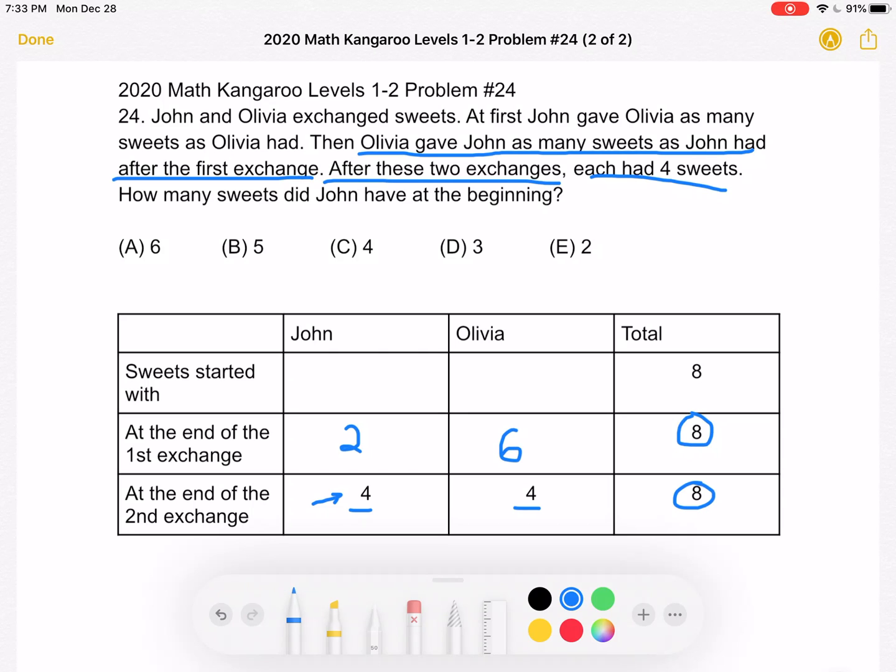Now let's work backwards again and try to figure out what happens during the first exchange. John gave Olivia as many sweets as Olivia had. So this time, John will give Olivia a certain amount of candies, that amount being equal to the amount she started with. So again, this time, Olivia is doubling the number of candies she has during the first exchange.